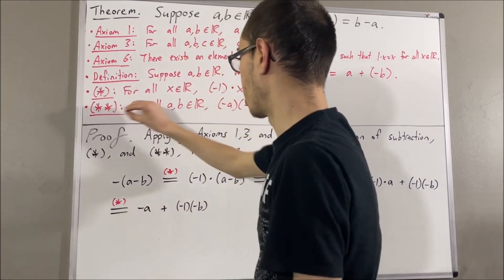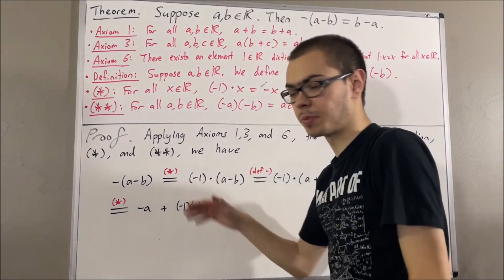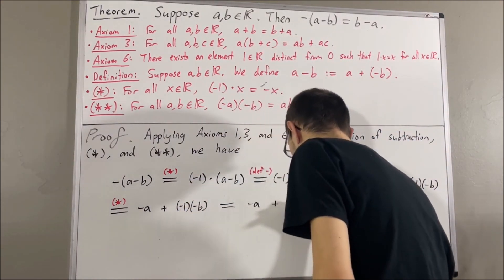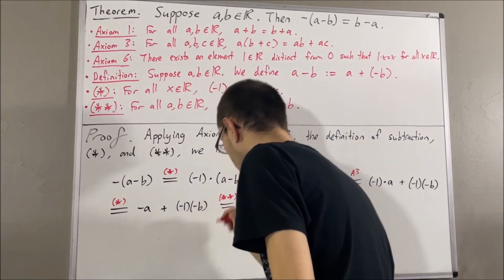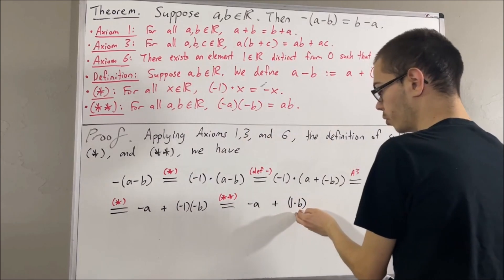But then, by star star, negative 1 times negative b is equal to 1 times b. But then, by axiom 6, 1 times b is equal to b.